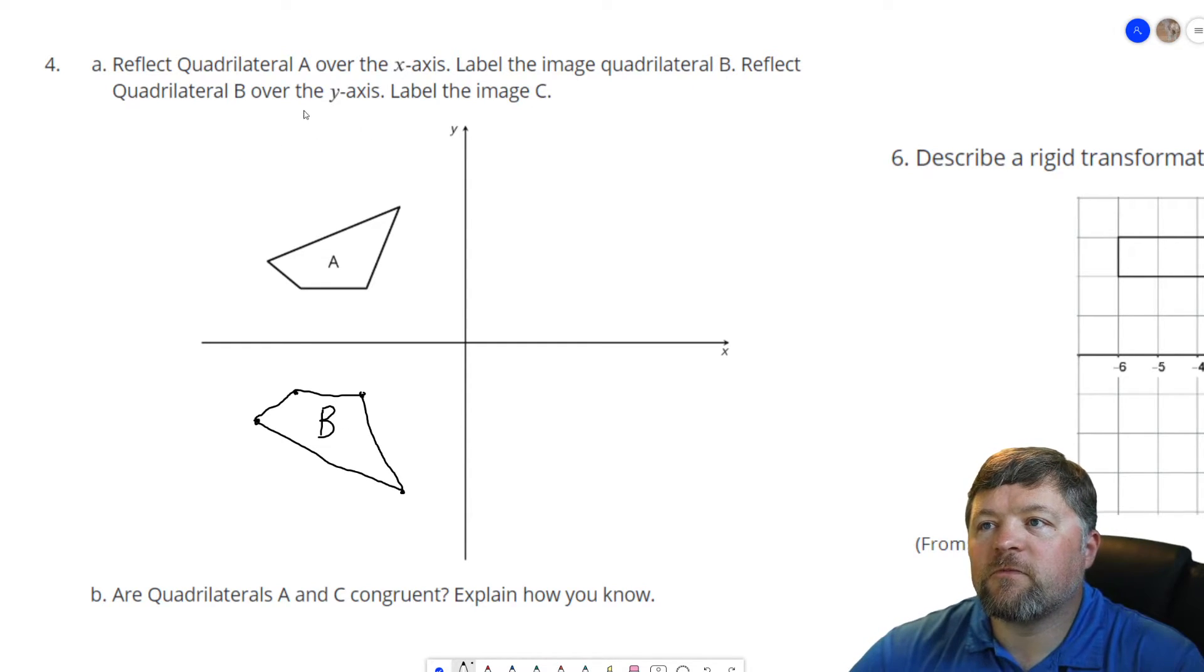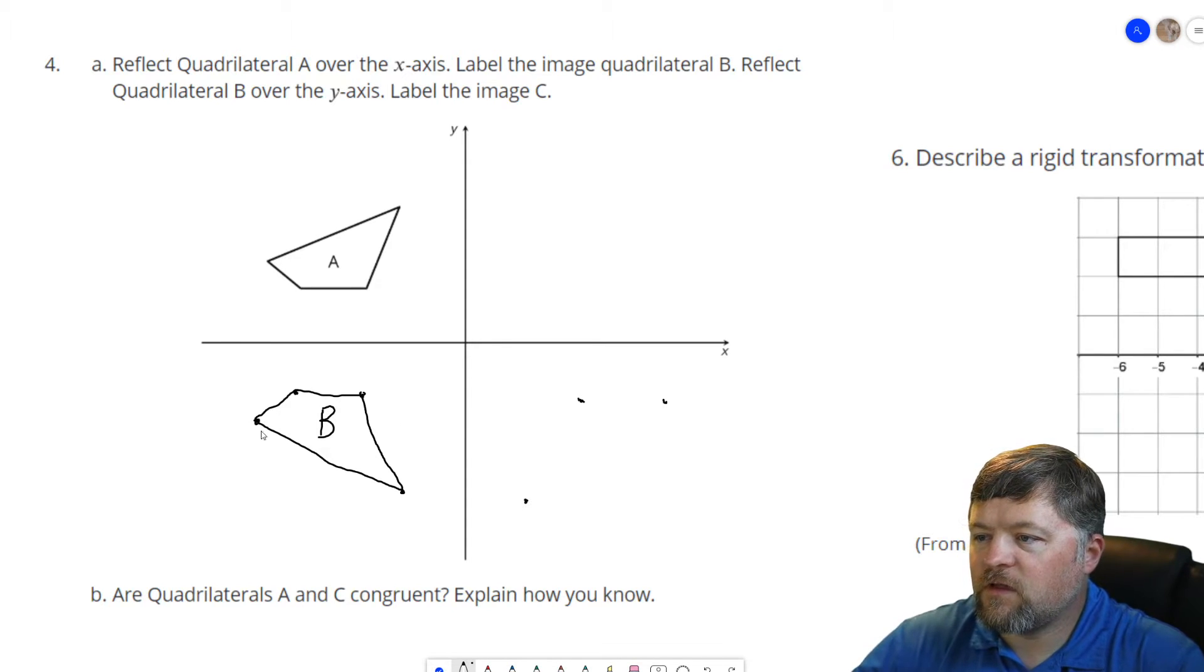Reflect quadrilateral B over the y-axis. So reflect B over the y-axis which would mean this point would go here, this point would go about there, that one goes and then this one goes here.